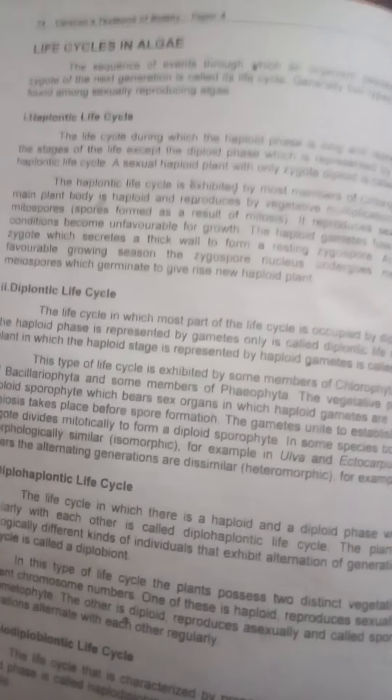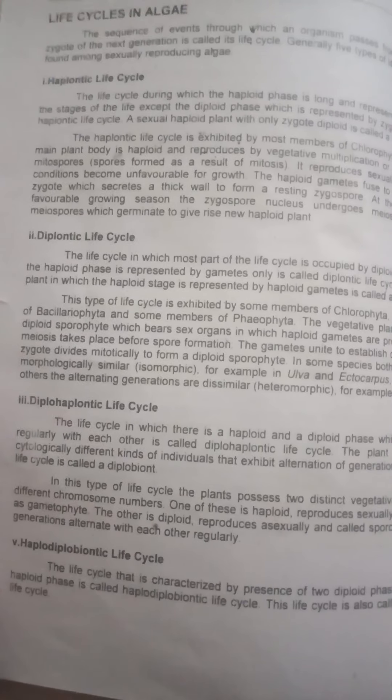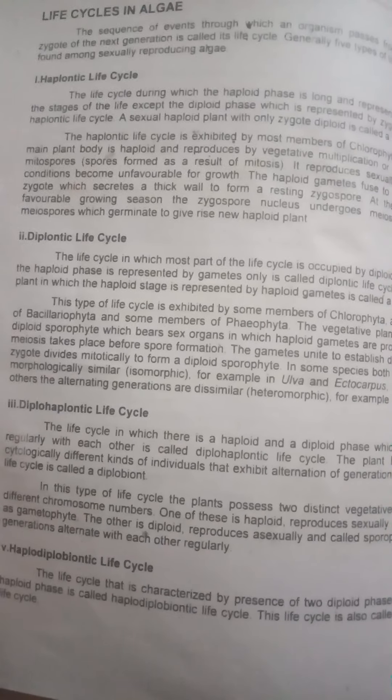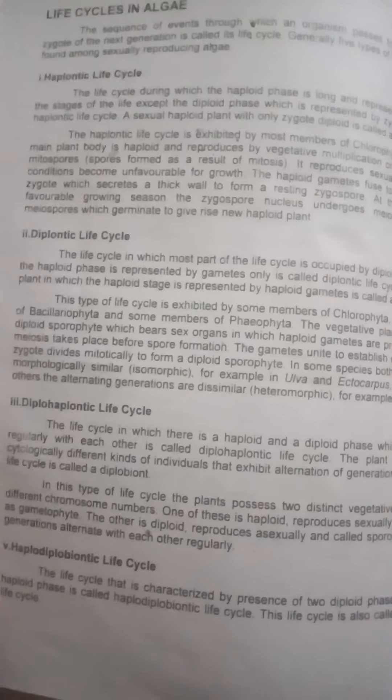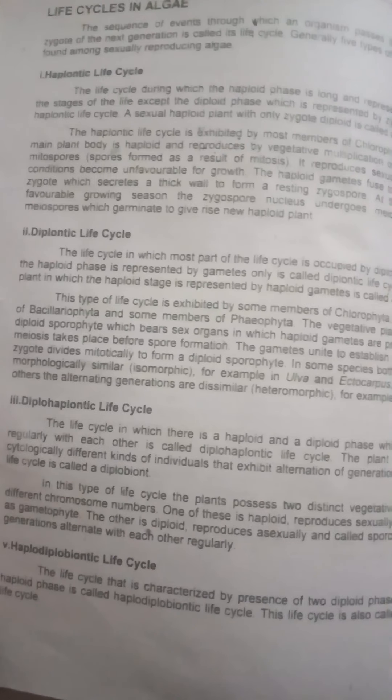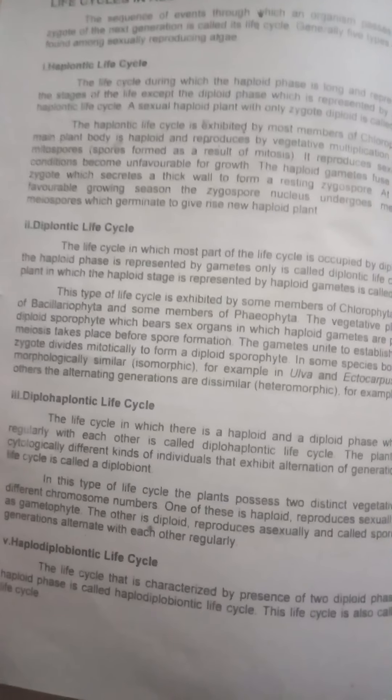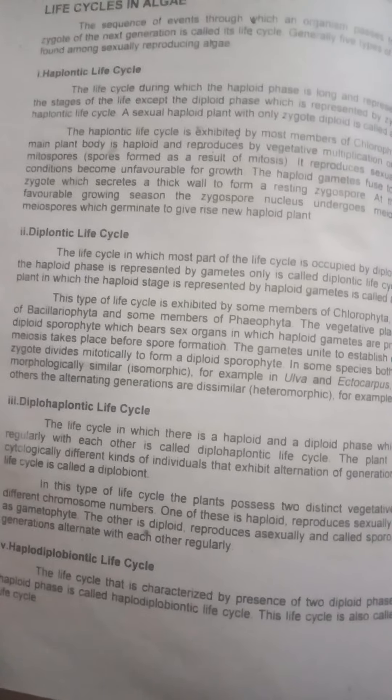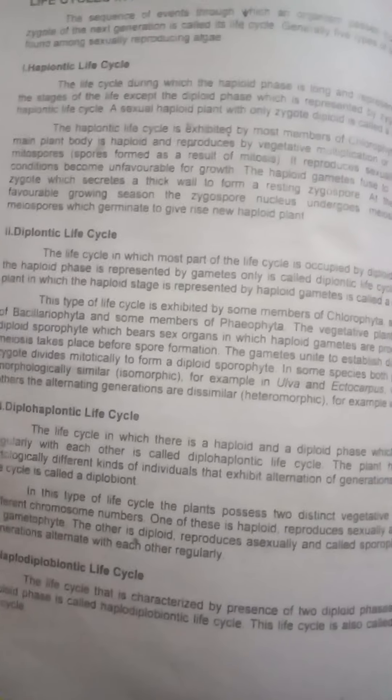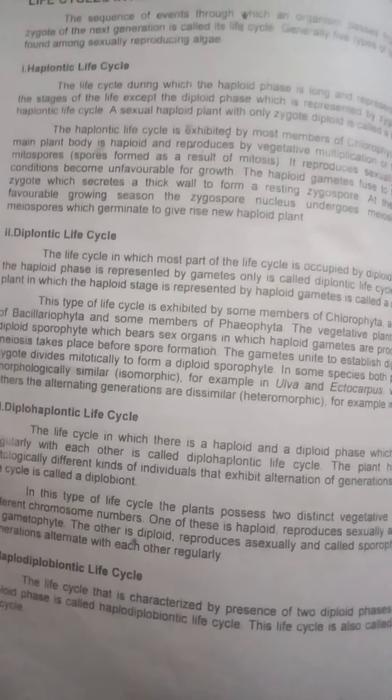There are five types of life cycles in algae. There are different classes such as brown algae, red algae, Phaeophyta, Rhodophyta, Chlorophyta, and Xanthophyta. Each class of organisms is morphologically different in its reproductive mode or life cycle. Many algae are only haploid throughout their life.